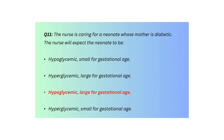Q11. The nurse is caring for a neonate whose mother is diabetic. The nurse will expect the neonate to be: hypoglycemic, small for gestational age; hypoglycemic, large for gestational age; hyperglycemic, large for gestational age; or hypoglycemic, small for gestational age.